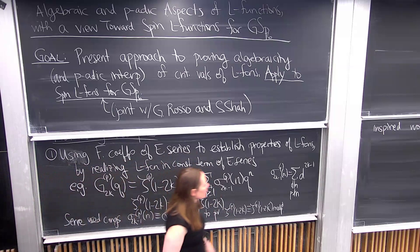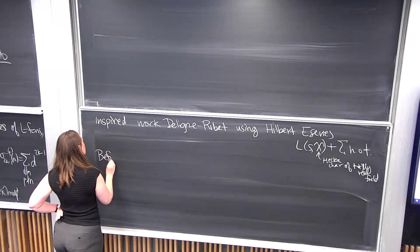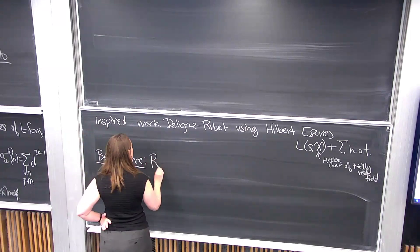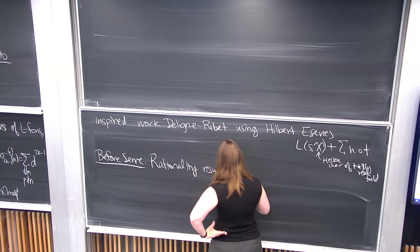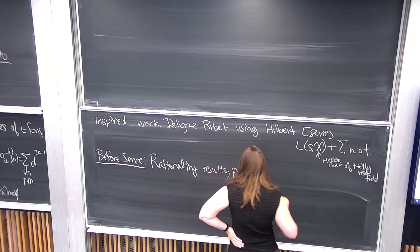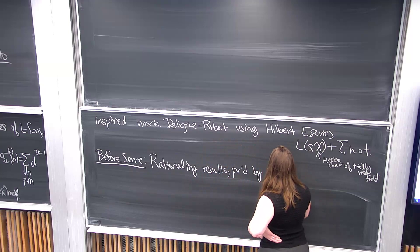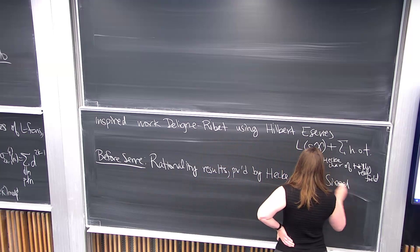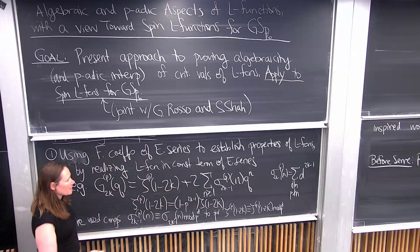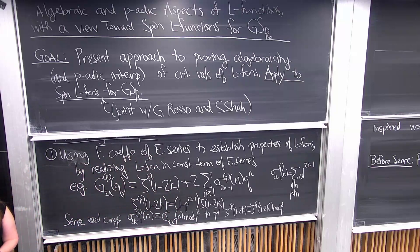Before Serre could do any of this, the rationality results for these L-values were established by Klingen and Siegel — though before that also Hecke established a lot of this. Going back to Xenia's talk earlier in the week, Marco asked 'what about algebraicity?' — those are the someone elses who provided the algebraicity results before Serre's work.